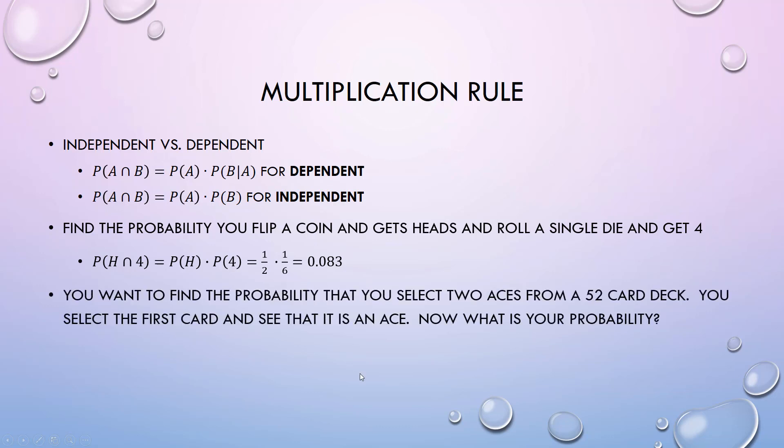What if we wanted to know you draw two cards from a 52-card deck and you want to know what's the probability both of those would be an ace? You draw one first and it's an ace, so you already have some information. These are dependent now. What's the probability the second one is an ace given the first one was an ace?